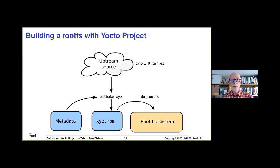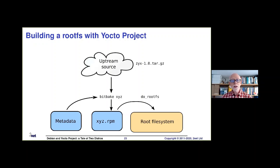Looking at things from the Yocto project point of view: this illustrates building using upstream source code. We have a bunch of metadata called BitBake recipes, a list of packages, and what we call an image recipe — a kind of meta-meta-recipe. BitBake builds all those packages for us: for each one it downloads the source code from the upstream location, builds it into a local package (by default using RPM format, though you can change that), and then puts all those packages together into the root file system. This is very, very deterministic.